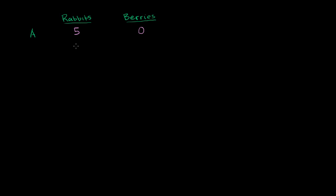Now let's say you were to allocate a little bit more time to get berries and a little bit less time to get rabbits — we'll call that scenario B. In scenario B, you have enough time to get four rabbits on average, and all of a sudden you're able to get 100 berries. When we do these different scenarios, we're assuming everything else is equal — not changing the amount of time hunting or gathering, not changing your sleep, not changing your techniques.